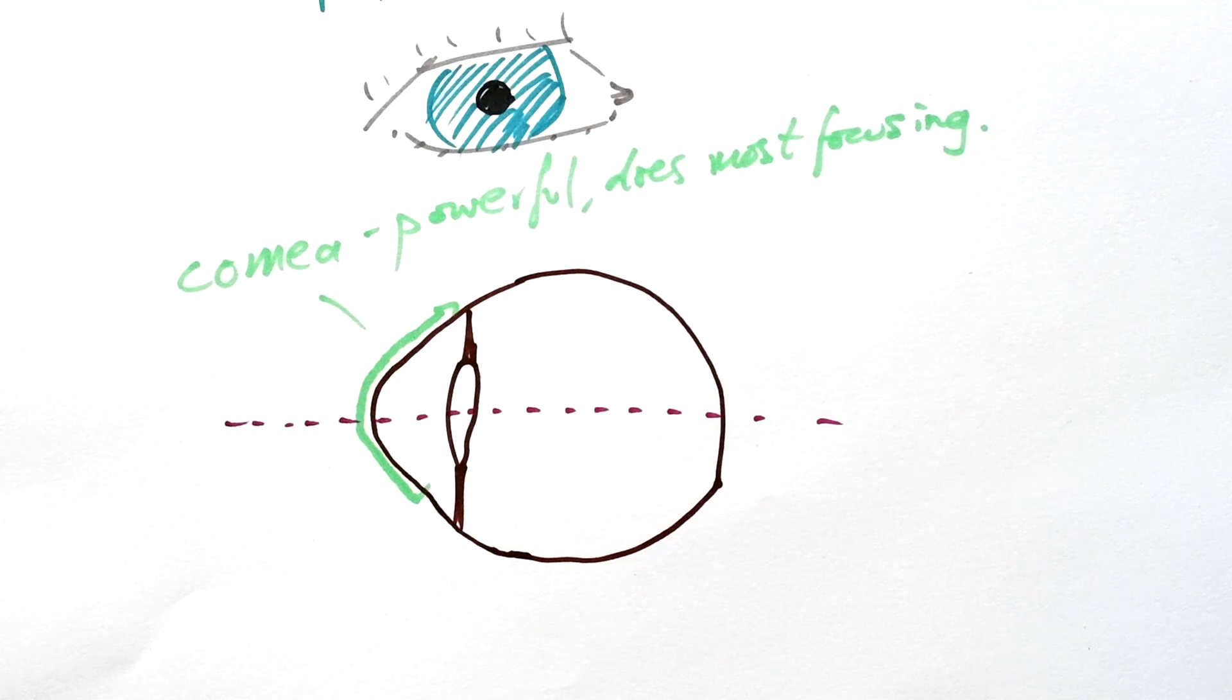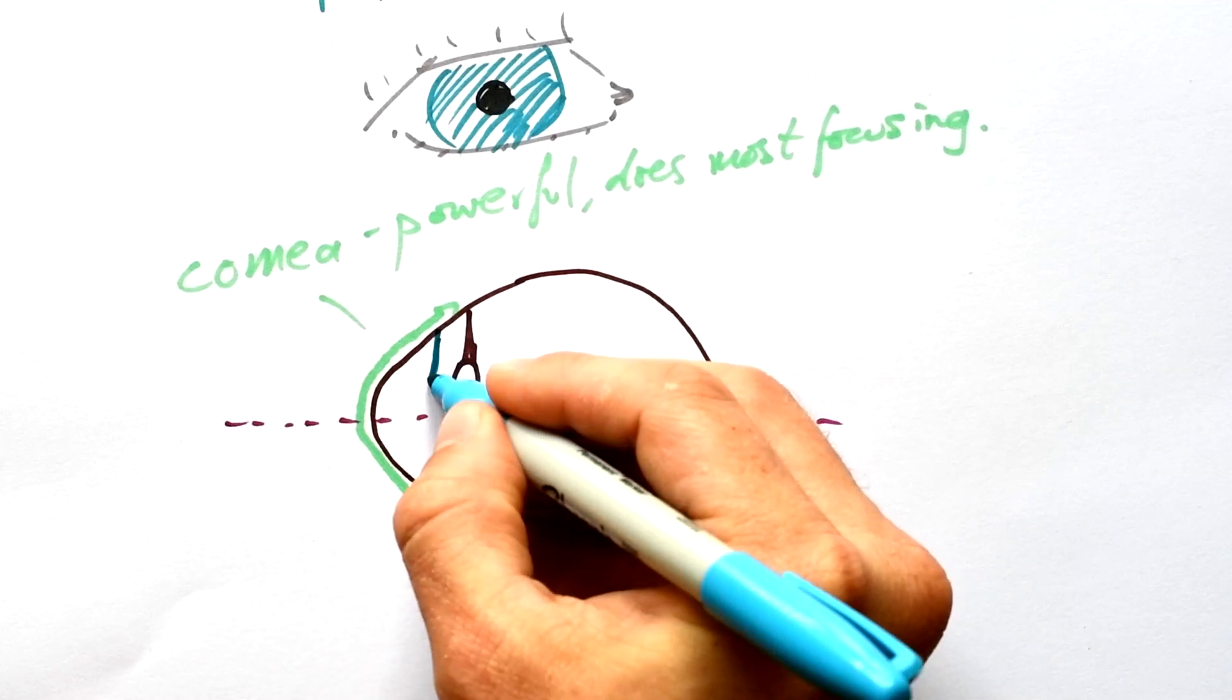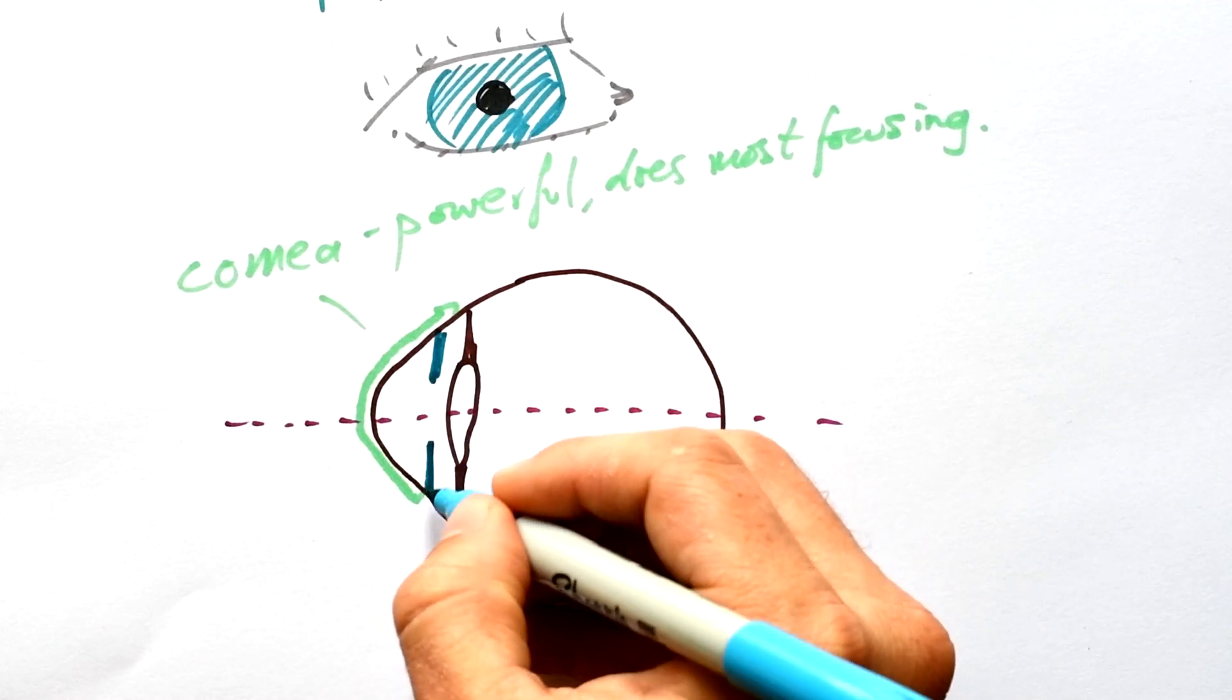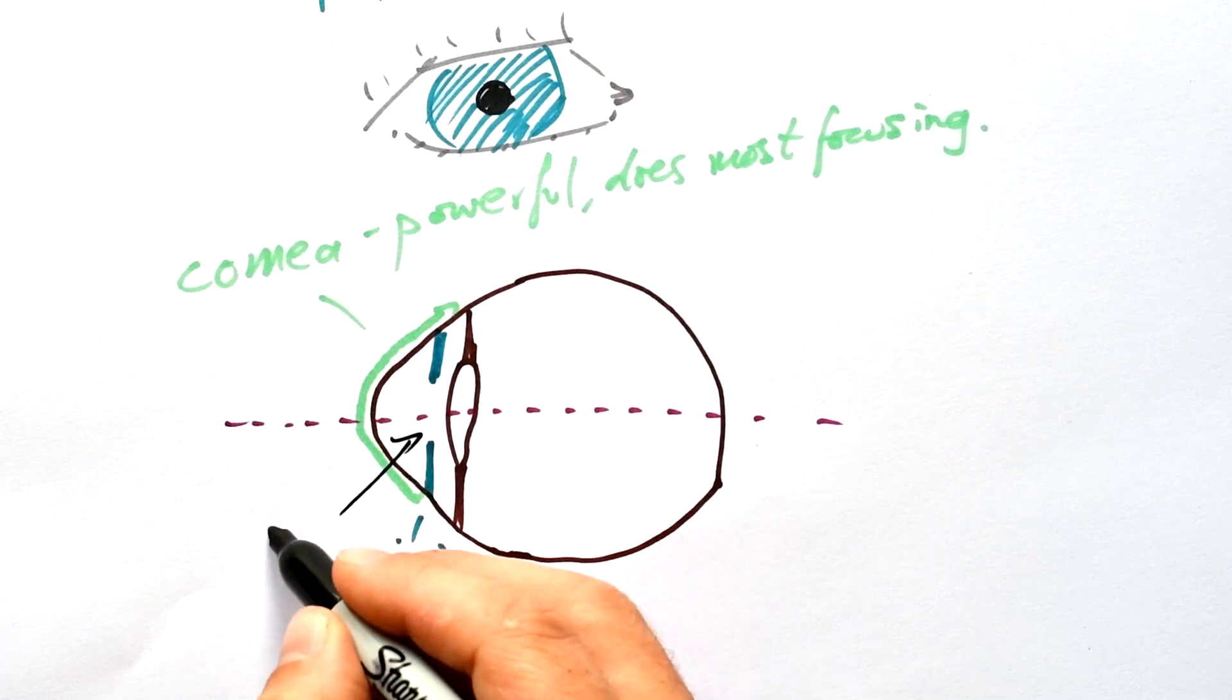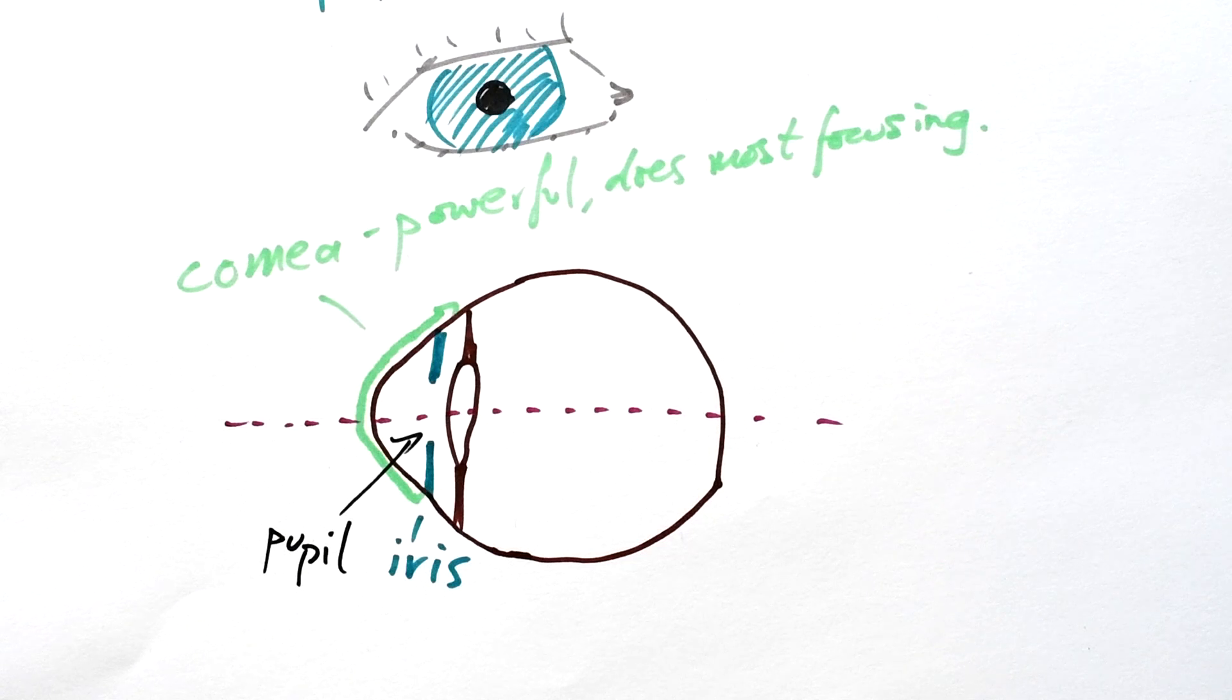Now a camera has an aperture as well. That's the bladed thing that lets more or less light through. Again, we have something similar and even better. This is the iris and that's obviously the bit that has color in your eye. The hole, we say, is the pupil. So the iris can open and close to make the pupil bigger or smaller to let less or more light in depending on how much light there is.